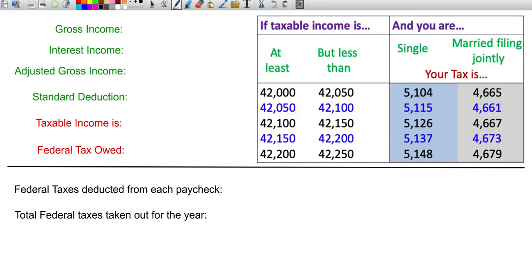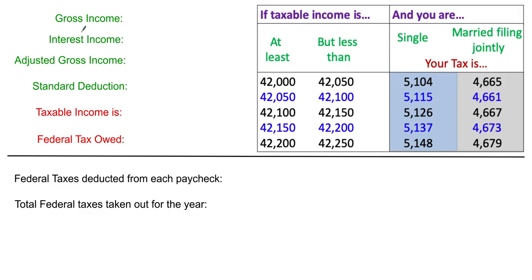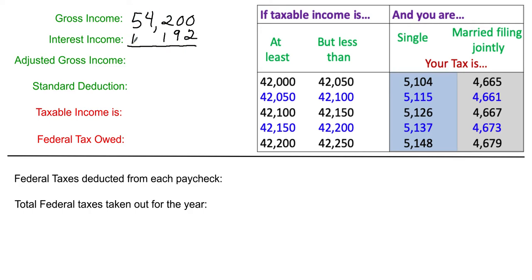Let's say our gross income for the year — the total amount of money you earned — was $54,200. You're responsible for paying federal tax on this. We're focused on federal taxes today, not city or local tax. Let's also say you earned $192 in interest from a bank or money market account. You're responsible for paying taxes on the total, so $54,200 plus $192 equals $54,392.